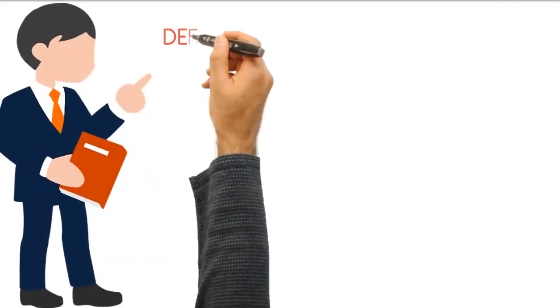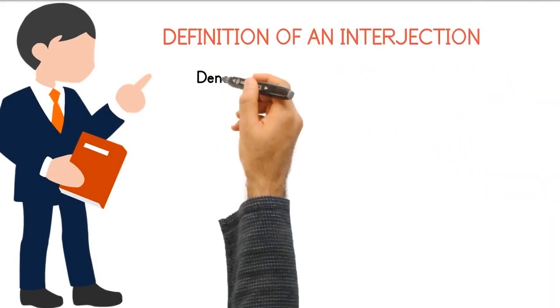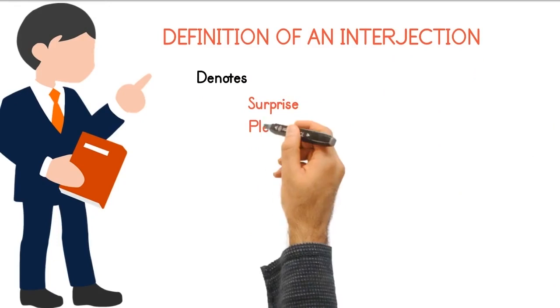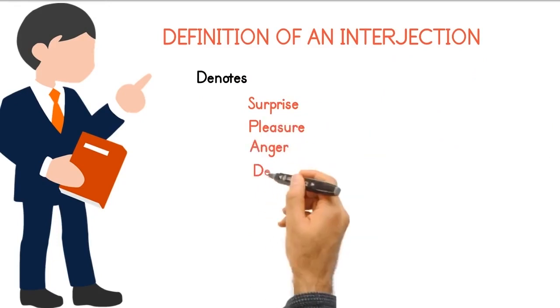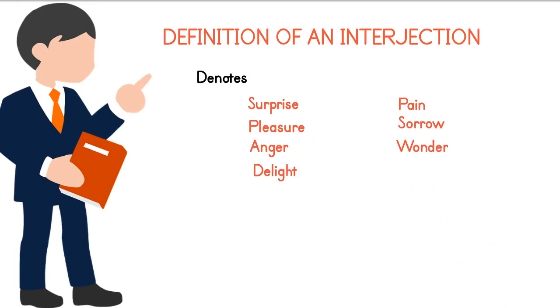An interjection is a word or group of words used to express a strong or sudden feeling. It denotes surprise, pleasure, anger, delight, pain, sorrow, wonder, and the like. An interjection is an independent element. It has no grammatical relation to the other parts of the sentence.